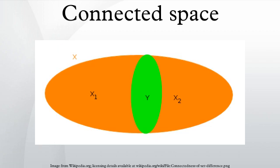In topology and related branches of mathematics, a connected space is a topological space that cannot be represented as the union of two or more disjoint non-empty open subsets. Connectedness is one of the principal topological properties that is used to distinguish topological spaces.